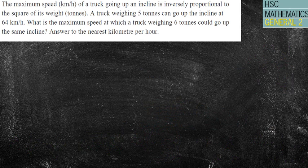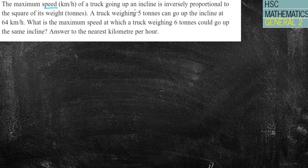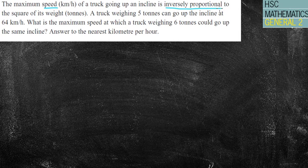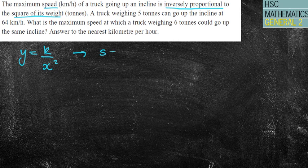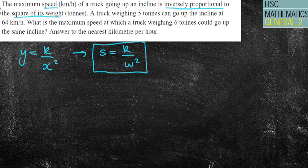I think we've got one more question, folks. Pause if you want to give it a crack. This will be more challenging. The maximum speed in kilometres per hour of a truck going up an incline is inversely proportional to the square of its weight. So I've got y equals k over x, but it's the square of x. I'll rewrite that with letters: s for speed equals k over w squared, where w is the weight. That's my equation of variation without the constant.